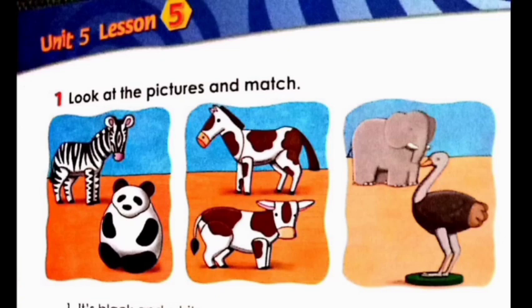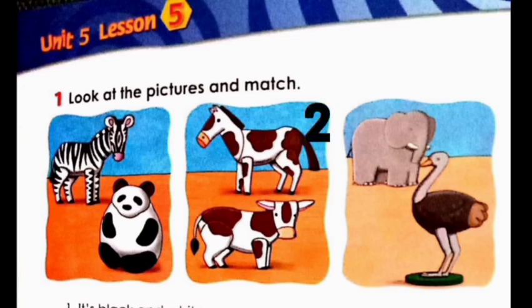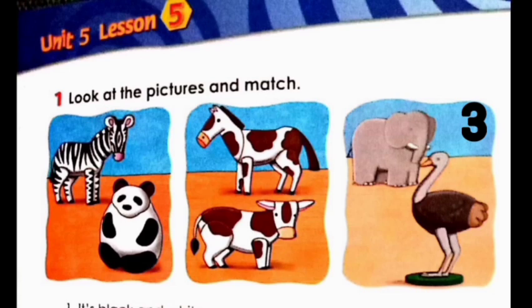Now we're going to move to your lesson — Unit Five, Lesson Five. Take your student's book. We have number one: look at the pictures and match. In the first picture we have a zebra and a panda. In the second picture we have a horse and a cow. In picture number three we have an elephant and an ostrich.